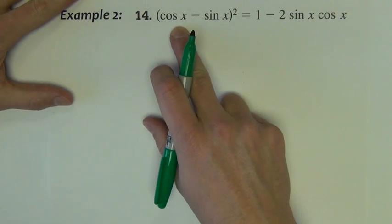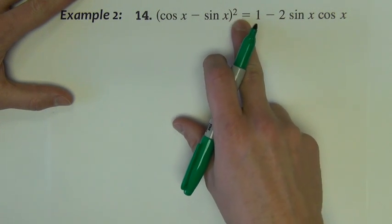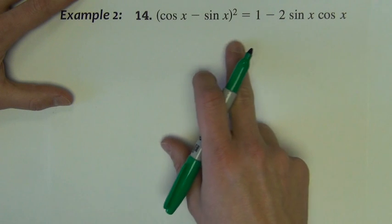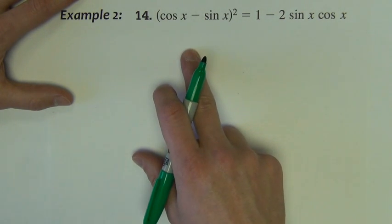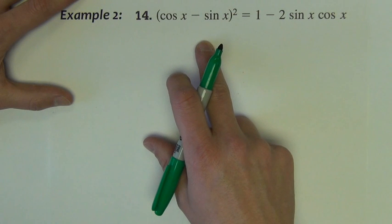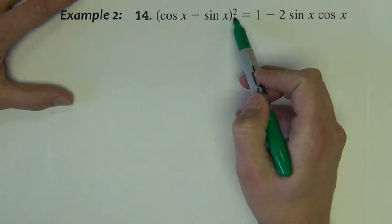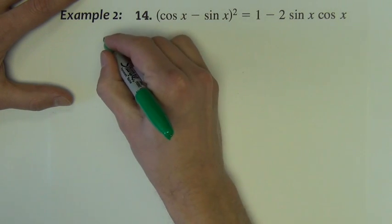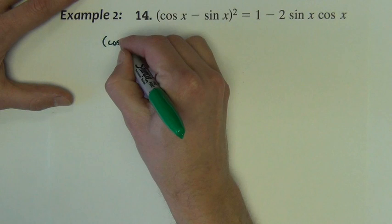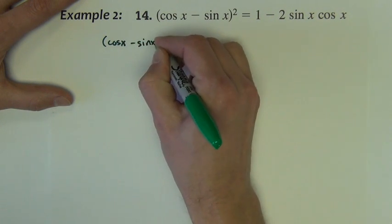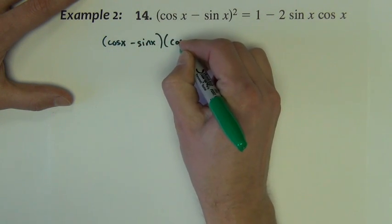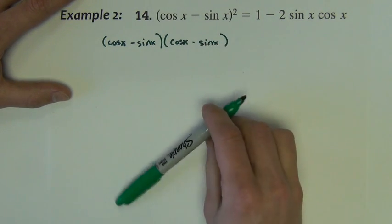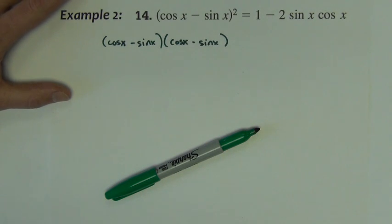The second example reads cosine x minus sine x quantity squared equals 1 minus 2 sine x cosine x. Well, the left hand side, again, looks more complicated to me because it has something that can be performed over here, some operation, and it has a second power. It's an opportunity to square this binomial. So let's first just rewrite it.